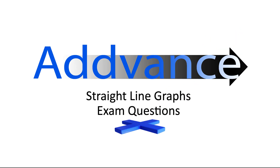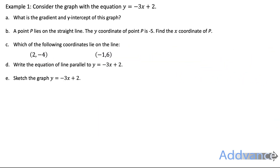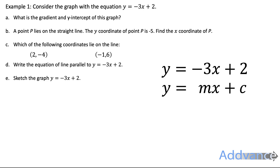Hello everybody, today we're looking at straight line graphs — some exam style questions. These questions come up every year in the exam, so make sure you pay close attention. We're asked to consider the graph of y equals minus 3x plus 2, which is in the form y equals mx plus c. The gradient is m equals minus 3 and the y-intercept is c equals 2.